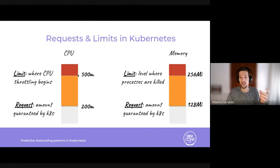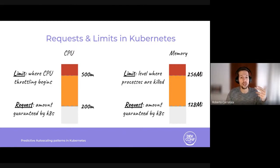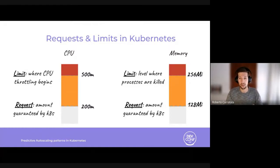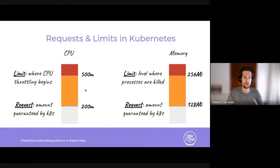A node is considered available if it can satisfy the requests of all containers in a pod. Remember that requests are used to ensure which node is the best fit for the given workload, evaluated at scheduling time.